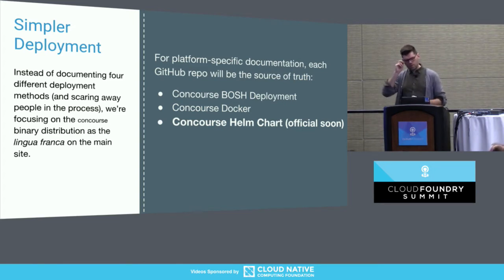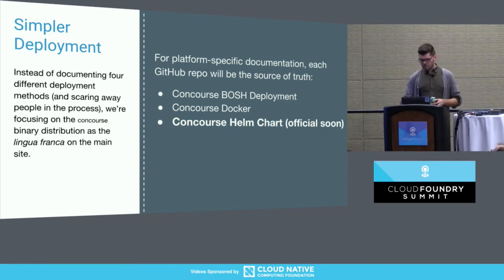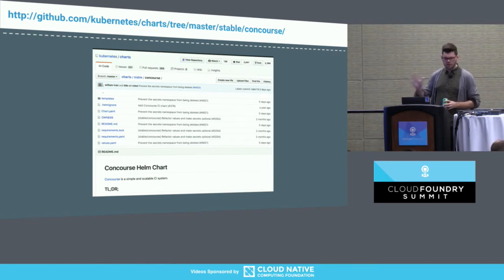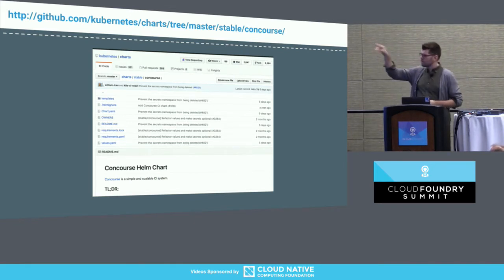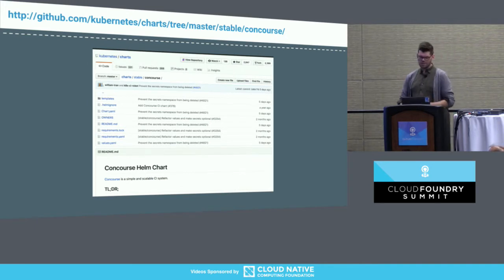We're also focusing on the Concourse Docker repo and improving that. The big thing we're focusing on is the Concourse Helm chart, kind of related to Kubernetes. There's been a lot of great work in the community on this Helm chart — it's out there in the stable directory in the Kubernetes charts repo. Shout-out to Wiltrand, a former Pivot who's been working away on that.